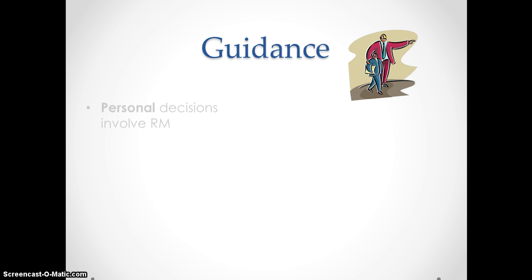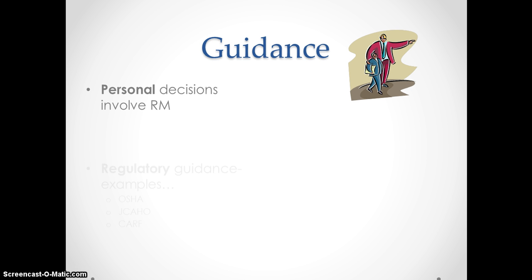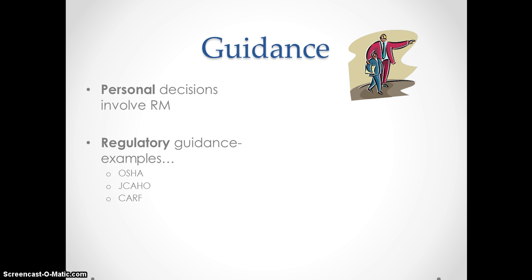Guidance can come in the form of many different things. Personal decisions in our day to day lives often require risk management procedures, whether we think about them consciously or not. It's an act of making informed, responsible decisions. Guidance may also come in the form of regulatory bodies. The Occupational Safety and Health Administration is one such organization that requires risk management practices to be in place for certain industries.